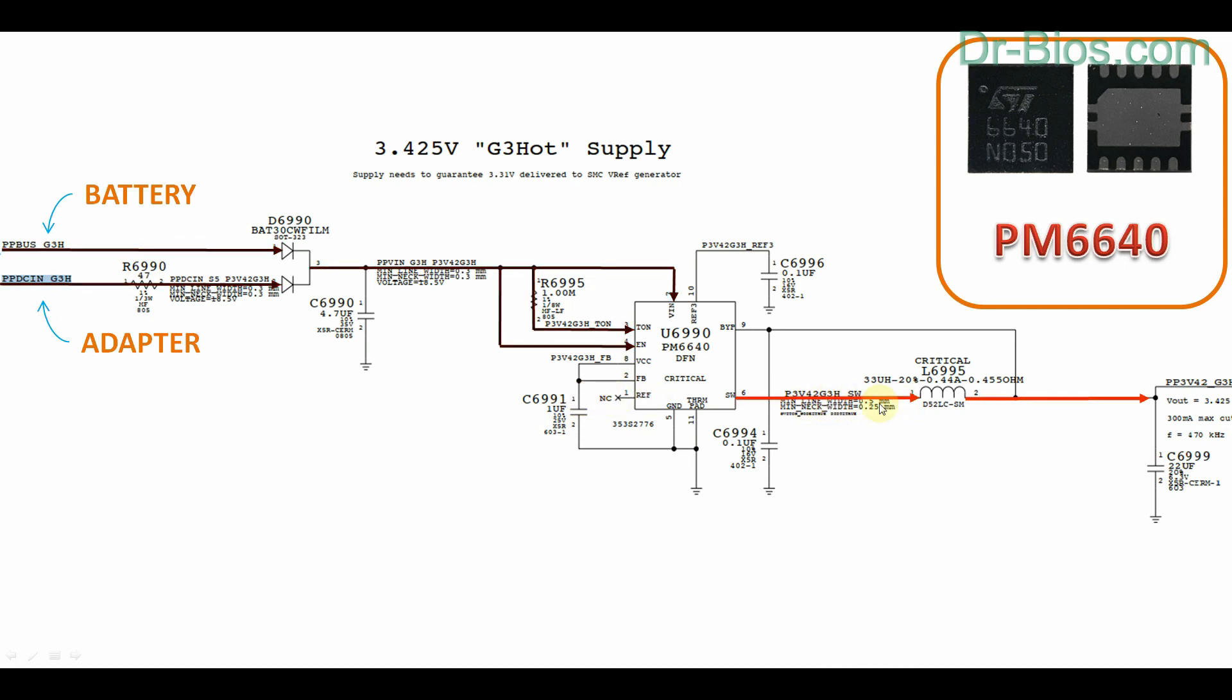which will cause a slight delay on output of IC. And IC will use its internal PWM technology and will start generating a voltage that exits through its SW pin. And that voltage will get stabilized after passing an inductor and reaches to 3.42 volts, which is PP3V42 underscore G3H voltage. And IC uses voltage bypass to solve error of its output, which as you see, it is connected to bypass pin.